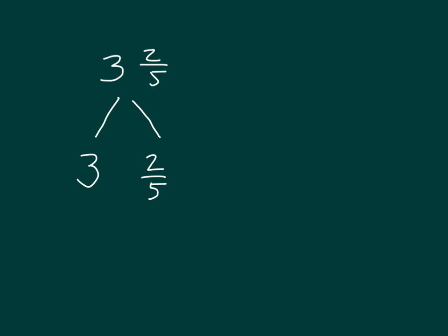Now, with the 3 ones, how many fifths are in those 3 ones? Or what are the 3 ones worth in fifths? 3 ones is worth how many fifths? Correct, 15. So, 3 and 2 fifths can be broken apart into 15 fifths and 2 fifths.